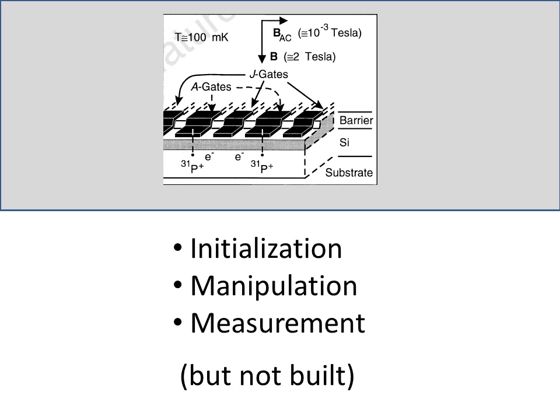Kane's proposed architecture, an MOS system shown here in a scaled version, accommodates initialization, manipulation, and measurement requirements for a quantum computer. Initialization is accomplished by manipulating the voltages on the A and J gates shown here. A gates control the resonance frequency of the nuclear spin qubits. J gates control electron-mediated coupling between adjacent nuclear spins of different donor atoms.